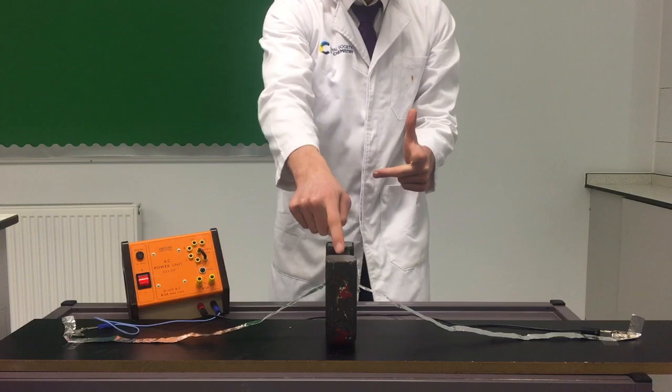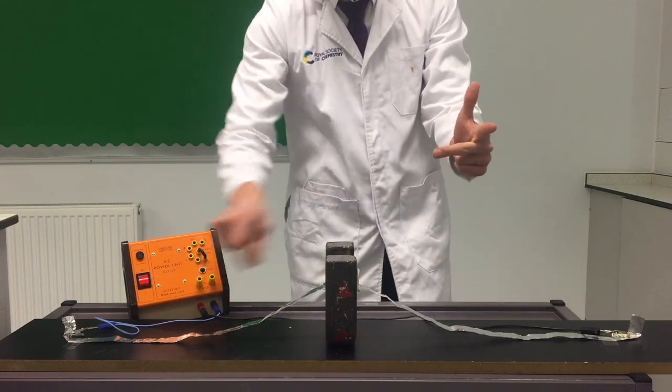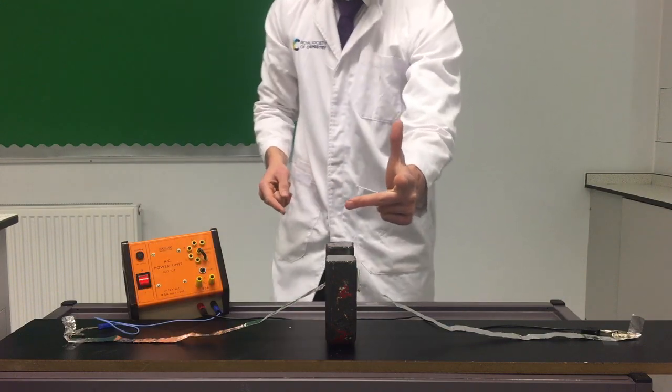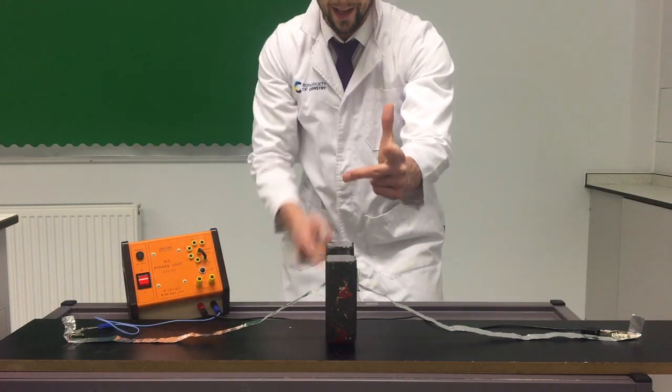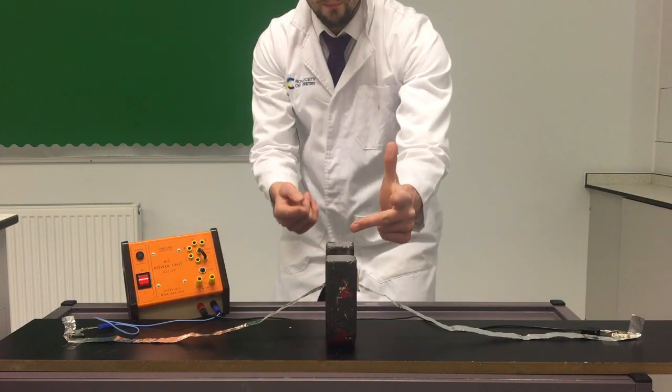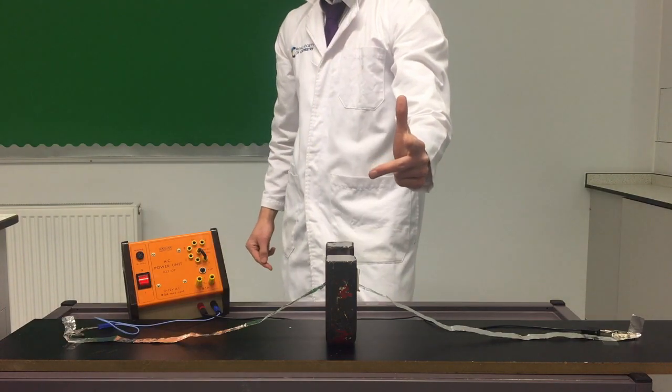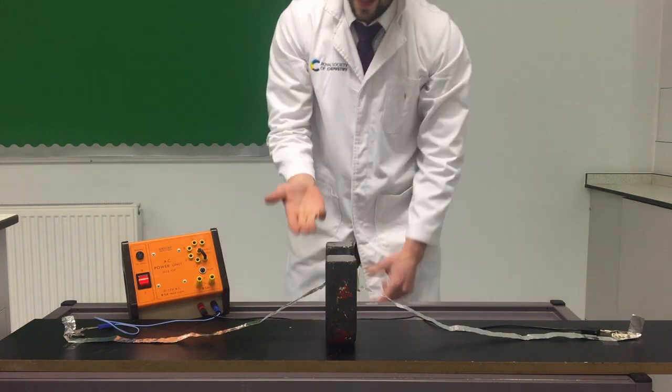So I'm pointing in the right direction. I've got the electric current coming from positive to negative, it's going that way. So I'm predicting using my left hand for the motor rule that when I turn the current on, there's going to be a movement of the aluminum foil upwards. Let's see.